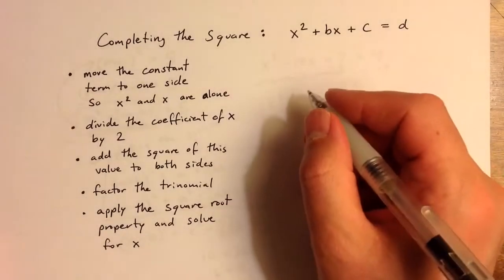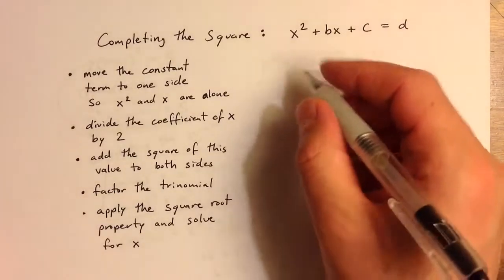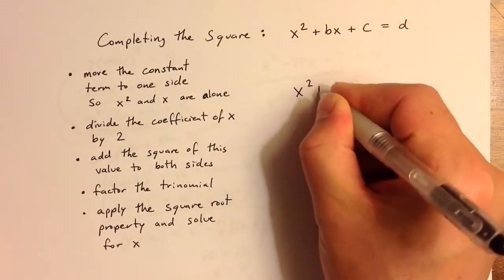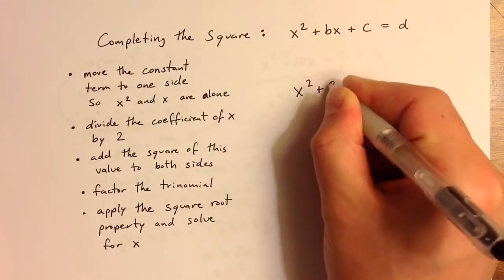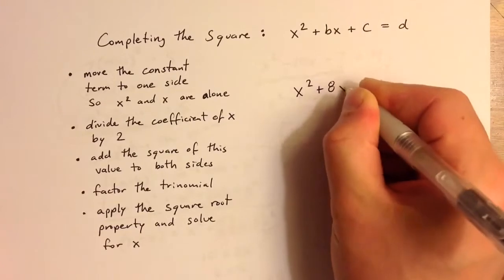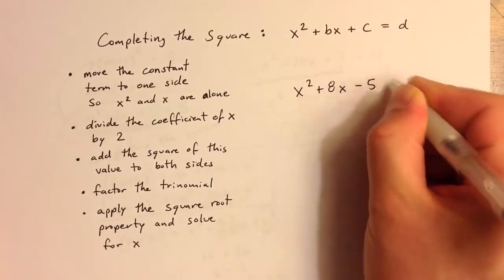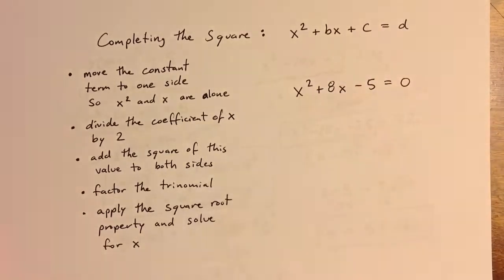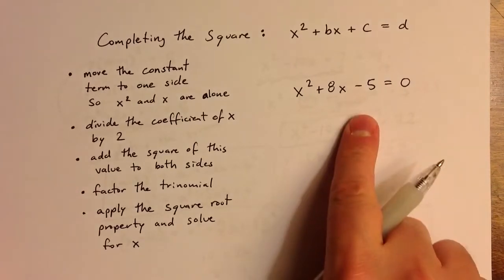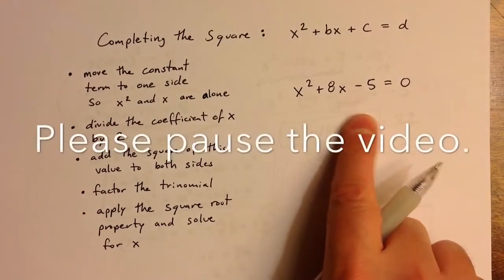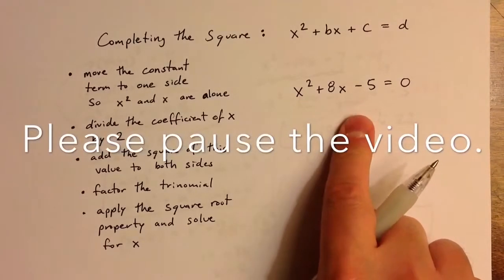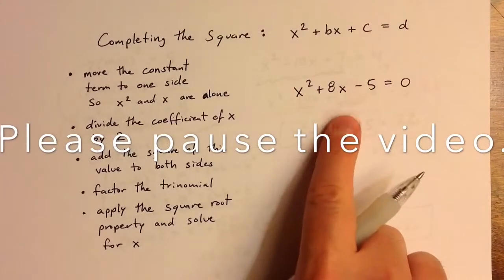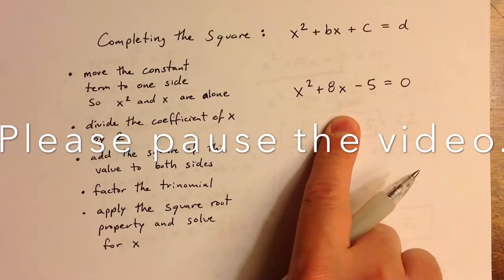So take a few minutes and try to solve the following problem: x squared plus 8x minus 5 equals 0. I encourage you to pause the video — I'll complete the solution here in just a moment. Pause the video and try to solve this by completing the square.